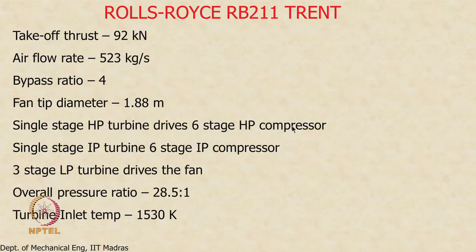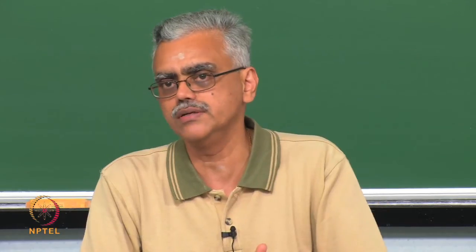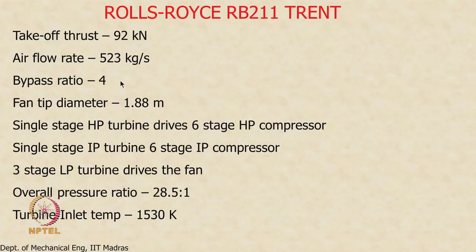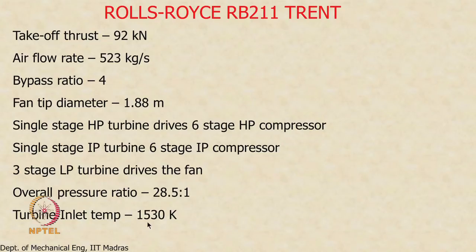In a multi-shaft arrangement, you can see the concentric shafts — the innermost drives the fan, the next drives the intermediate pressure compressor, and the outermost drives the high pressure compressors — all rotating at different RPMs. Typical specs for this engine: about 90 to 100 kN of thrust, airflow rate of about 523 kg/s, bypass ratio ranging from 4 to 10, fan tip diameter around 2 meters, and pressure ratio about 30:1, with turbine inlet temperatures around 1530 K on the lower end.